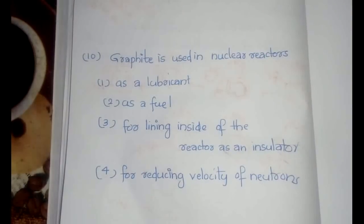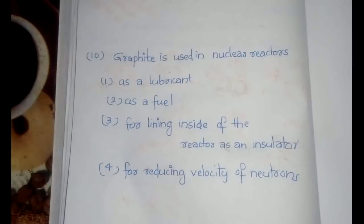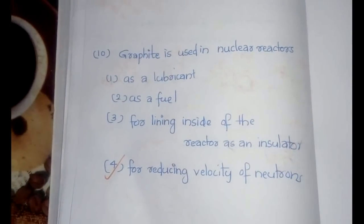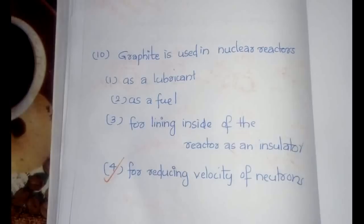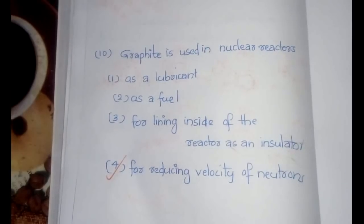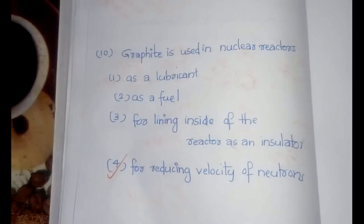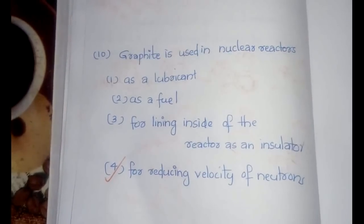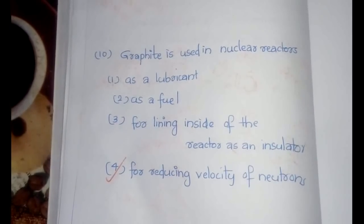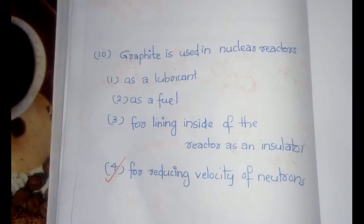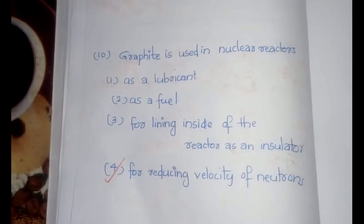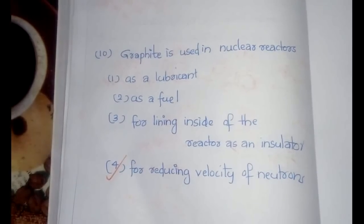The final question is from the nuclear reactor topic: graphite is used in nuclear reactors as what? Graphite is used to reduce the velocity of neutrons. If neutron velocity is not reduced, neutrons move too fast for the chain reaction to occur. Graphite slows neutrons so they can encounter the fuel repeatedly and sustain the chain reaction.